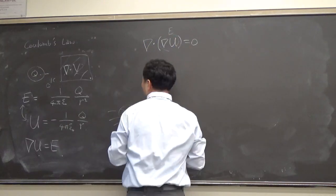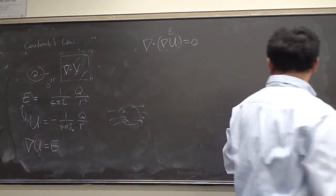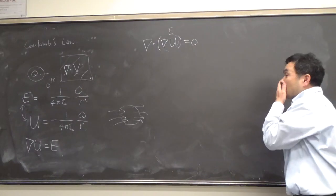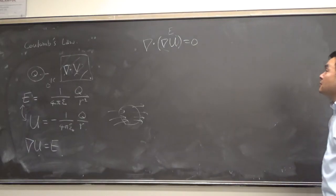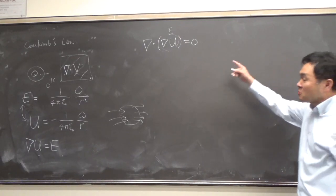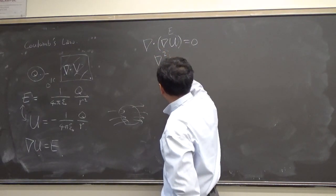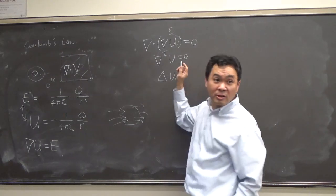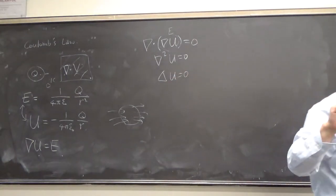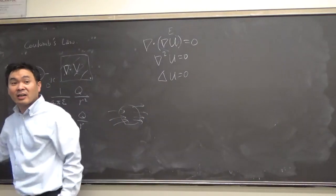The divergence of the gradient of U has to be zero because this is your electric field and divergence is zero outside the charge. That gives us nabla squared U, which is the Laplacian of U equals zero. So the Laplace equation is true for any place that does not contain any charge.